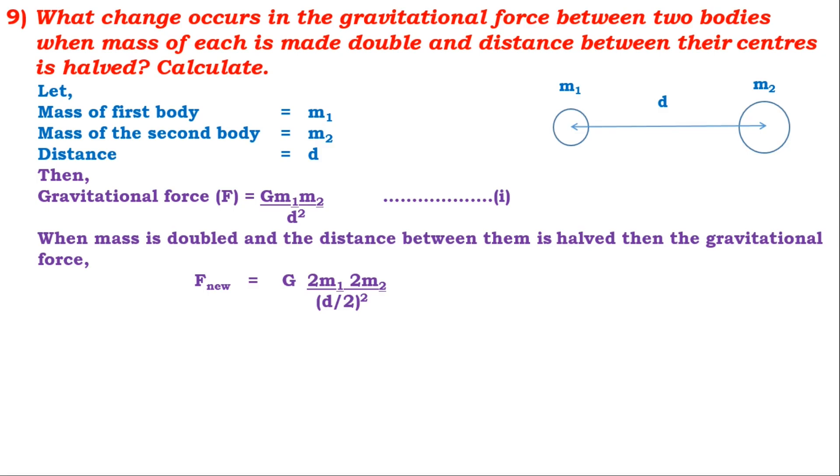Multiplying 2 with 2, we get F_new = 4 G M1 M2 in the numerator. In the denominator, (D/2)² = D²/4. Taking 4 to the numerator, we finally get F_new = 16 G M1 M2 / D², because 4 multiplies 4 and makes 16.